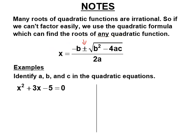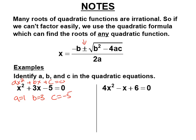Quadratics are in the form ax squared plus bx plus c equals 0. In this equation, a was 1, b was 3, and c was negative 5. Find a, b, and c in this one. So a was 4, b was negative 1, and c was positive 6.